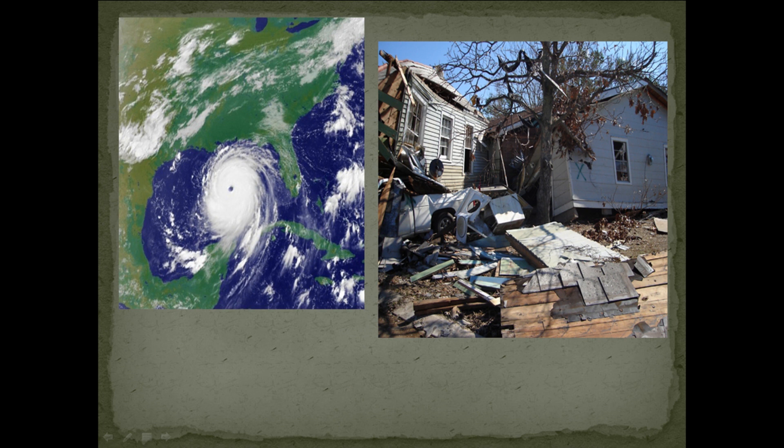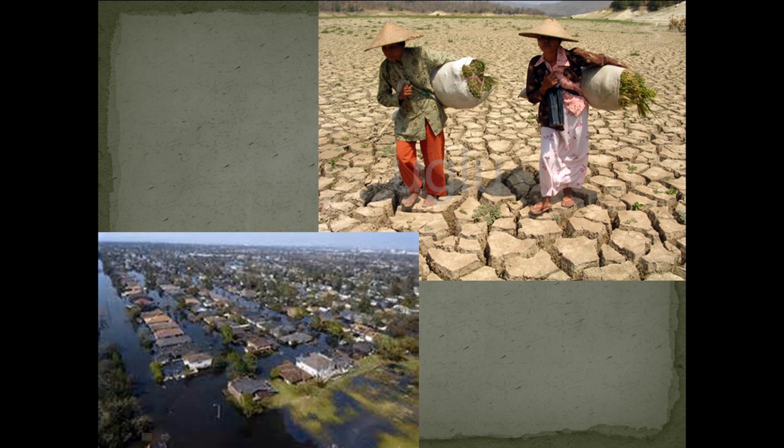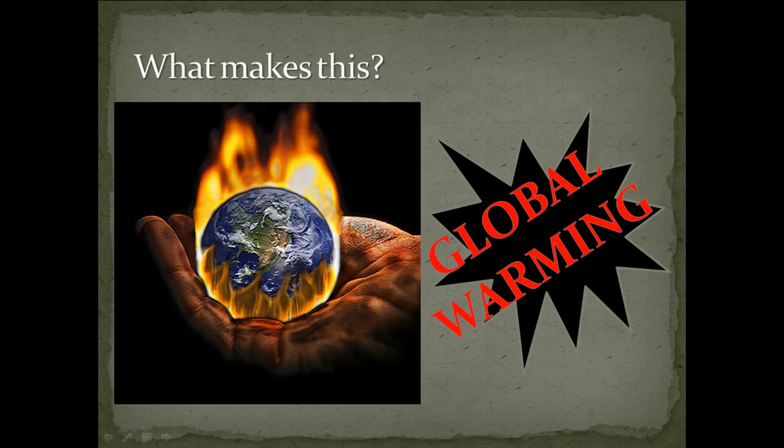It will cause property damage and loss of life. Sea level rise will cause flooding, meanwhile droughts will cause shortage of food. And global warming — what had caused this?